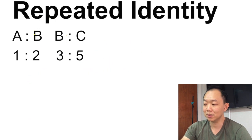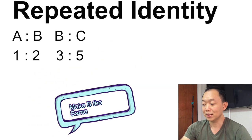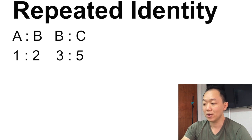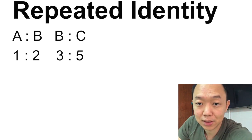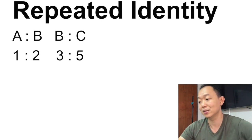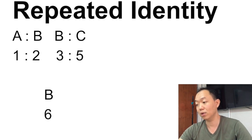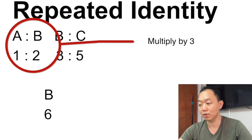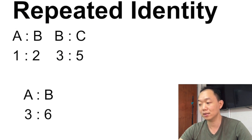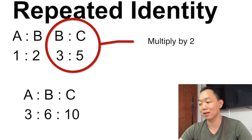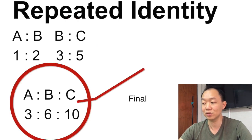B — person B is being repeated. So what do you need to do when B is being repeated? Make it the same. Currently it's not the same — it's a 2 and a 3. Same person means the repeated identity value must be the same, so we make it 6. To make it 6, the first ratio multiplies by 3: 1 times 3 becomes 3, 2 times 3 becomes 6. And for the second ratio, 3 times 2 becomes 6, 5 times 2 becomes 10. So we get the entire picture: A to B to C is 3 to 6 to 10. That's repeated identity.